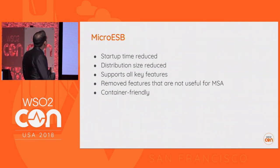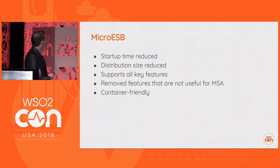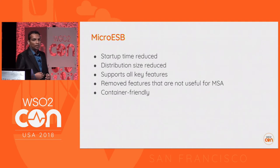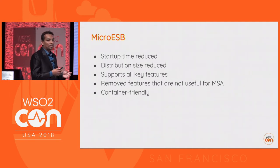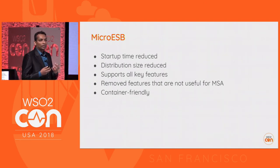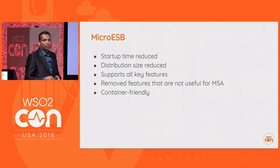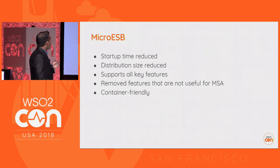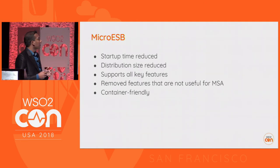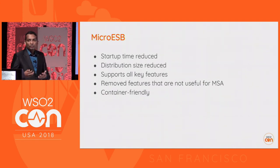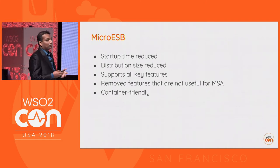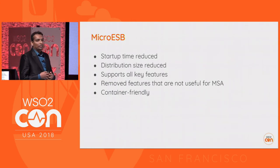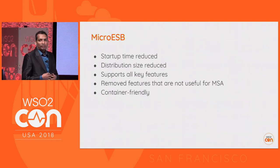Now let me talk about the Micro ESB profile we introduced recently. In microservices architecture, there are mainly two types of services: atomic services, which are the most fine-grained services serving a particular task, and composite services, which are created by combining multiple atomic services. The ESB is capable of composing these composite services and has all the functionalities required to wire and build them. However, one major point that prevented it from being deployed in a microservices architecture was the startup time.